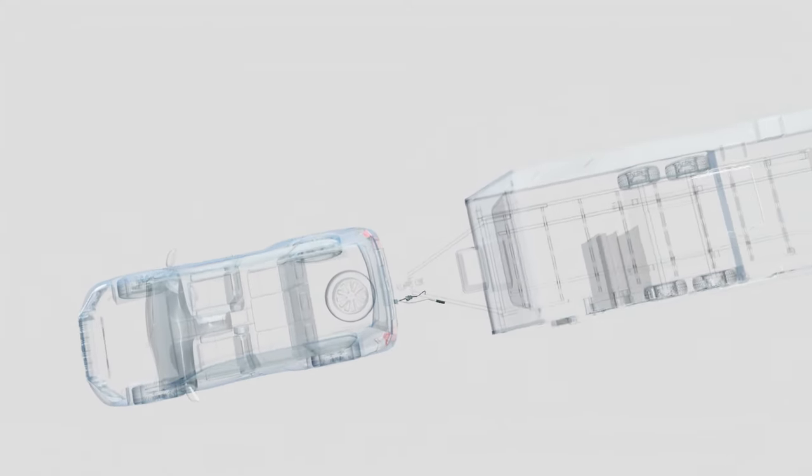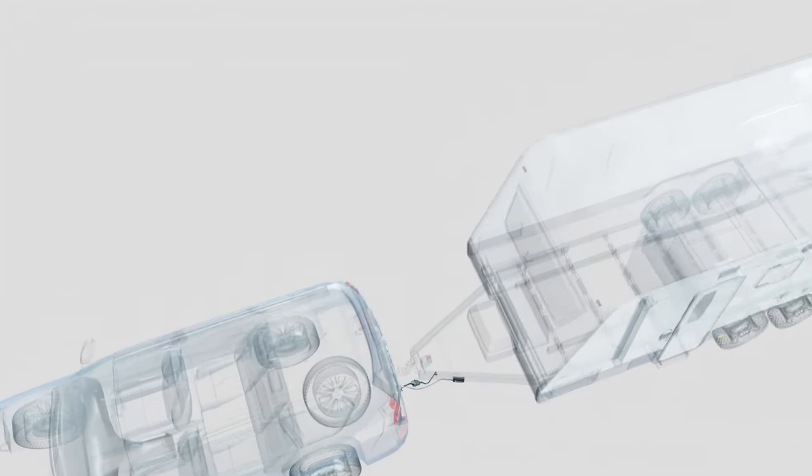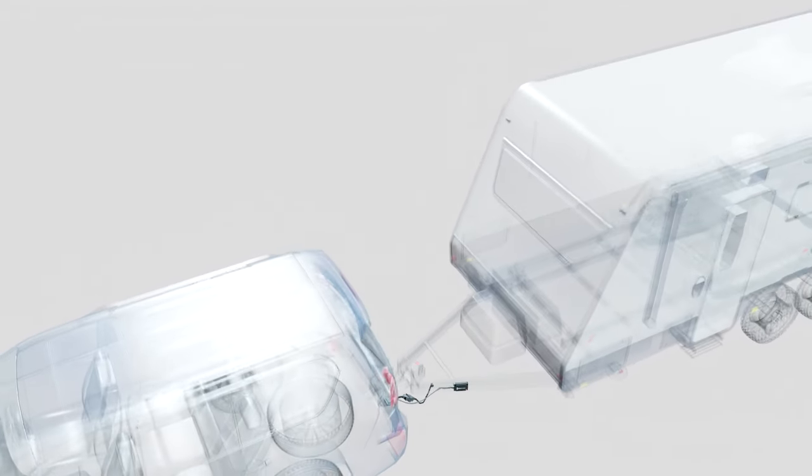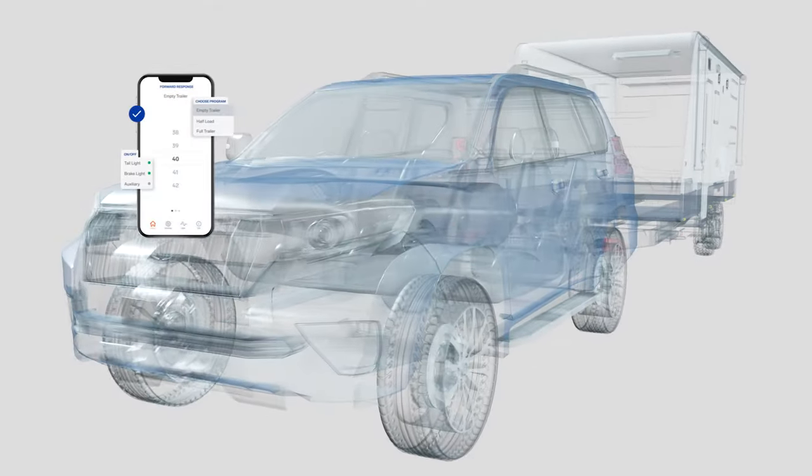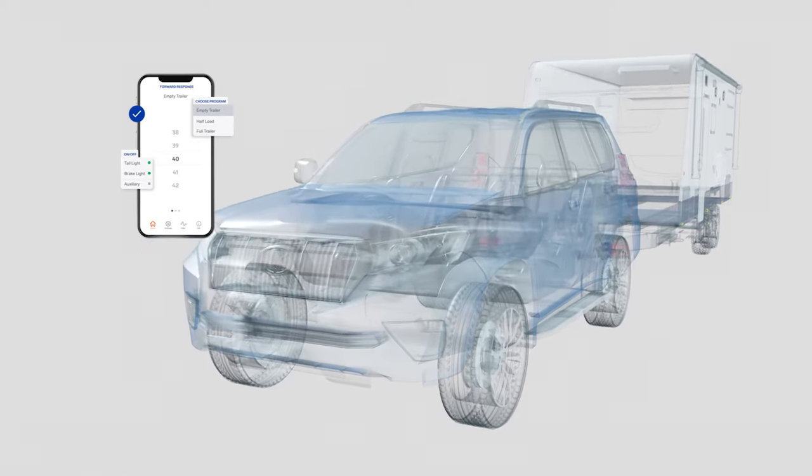The unit is referred to as wireless because of the connection between the smartphone app or remote control and the brake controller itself. The app or remote is used from the driver's seat to tweak brake response settings if needed.